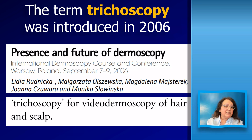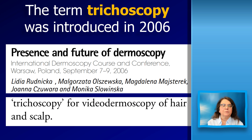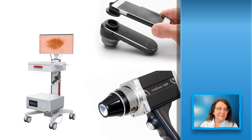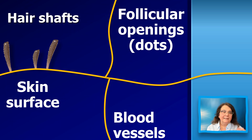What is trichoscopy? Trichoscopy is a diagnostic procedure designed for diagnosing hair and scalp disorders. It is a method based on hair and scalp dermoscopy — the term was introduced some years ago by a group I am happy to be part of. Trichoscopy can be performed with any handheld dermoscope, but also with digital dermoscopes, which are best for experts who want to keep photographs or prefer higher magnification.